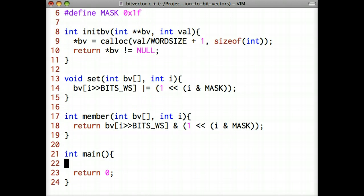In the main function, we'll declare a pointer to our bit vector and an integer that will be used to iterate through our sets.